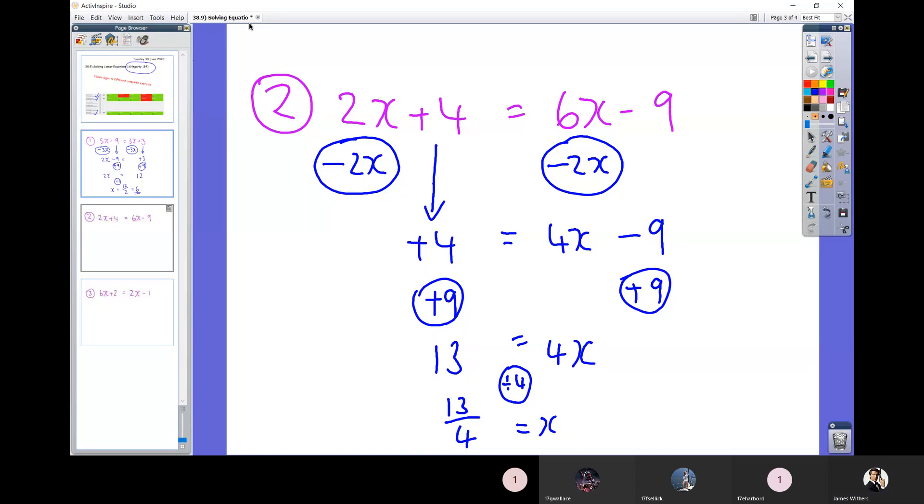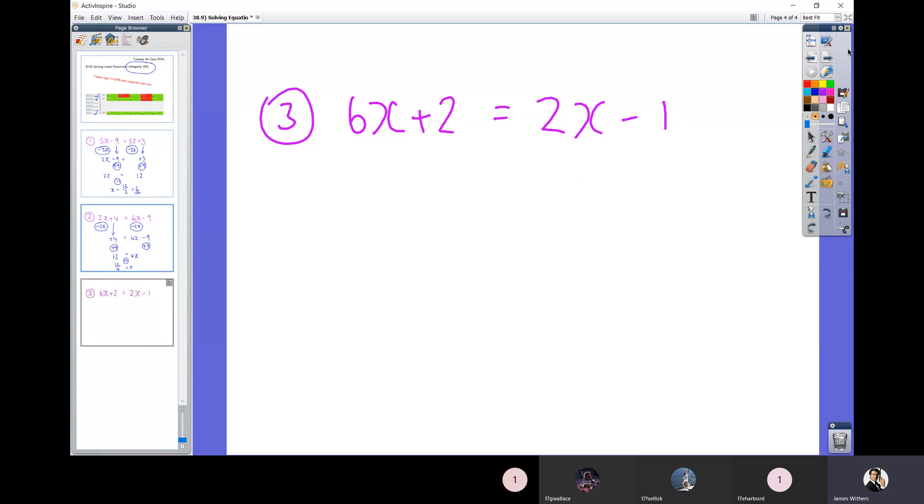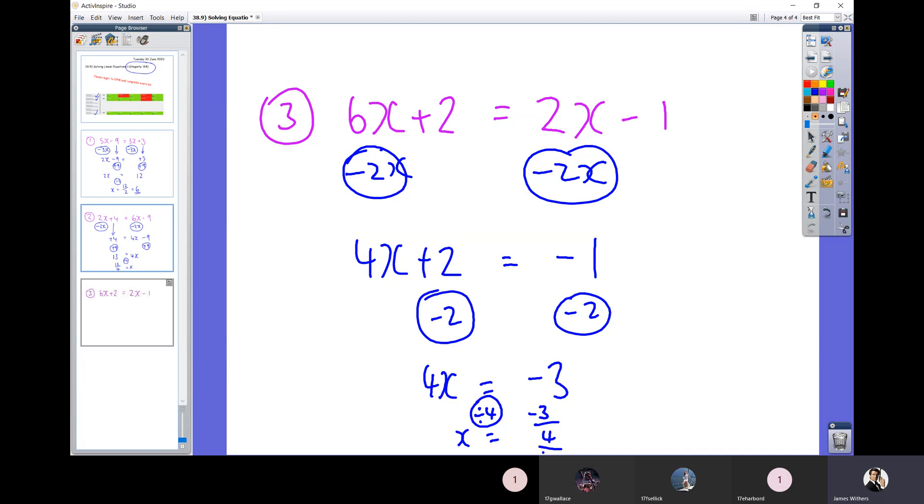And final question. Okay, so on this occasion the x's are going to go to the left. So 4x plus 2 equals minus 1. So x is on the left, normal numbers on the right. So to undo a plus 2, we're going to minus 2. So 4x equals minus 3. Remember, minus 1, you take away another 2, takes you further into the negatives to minus 3. 4x equals minus 3. Make sure you get this the right way around. To undo a timesing by 4, we divide by 4. So x equals minus 3 being divided by 4. So minus 3 quarters.